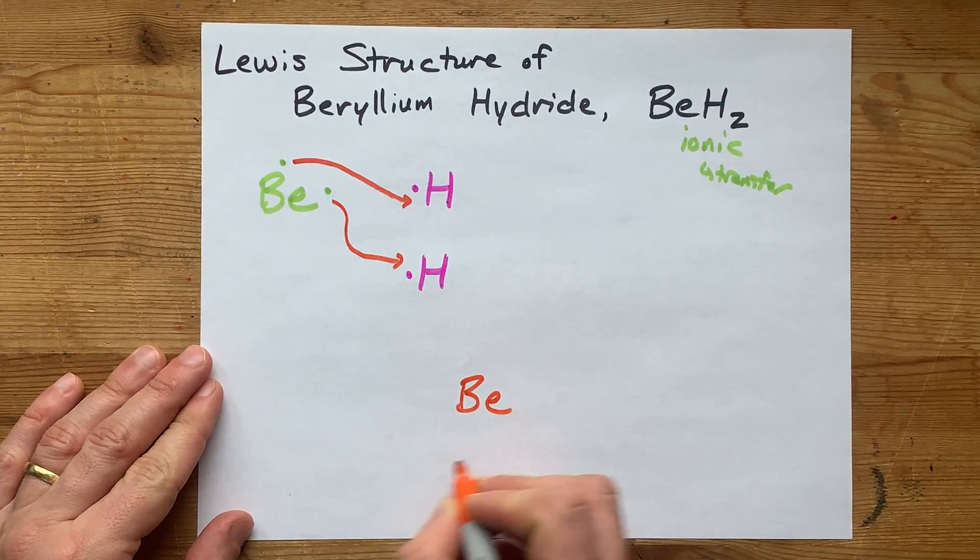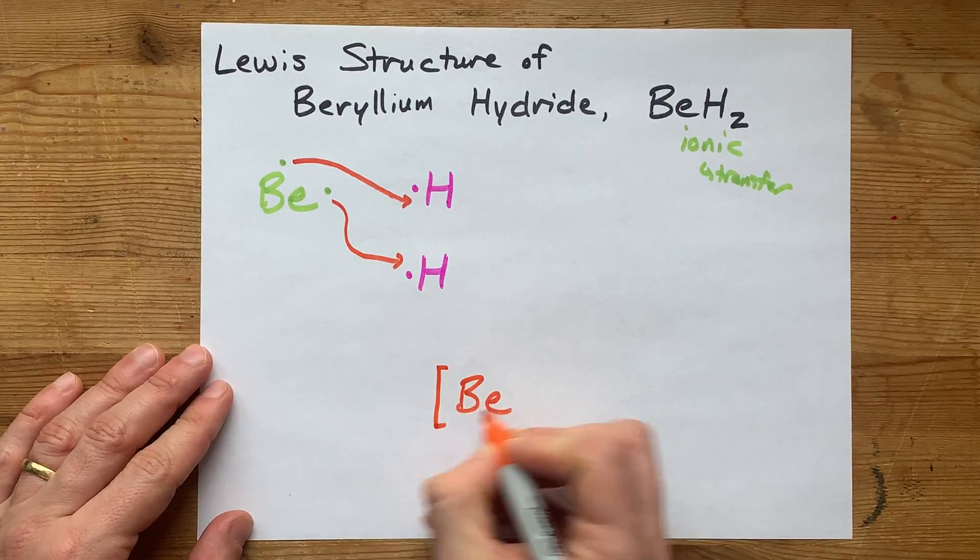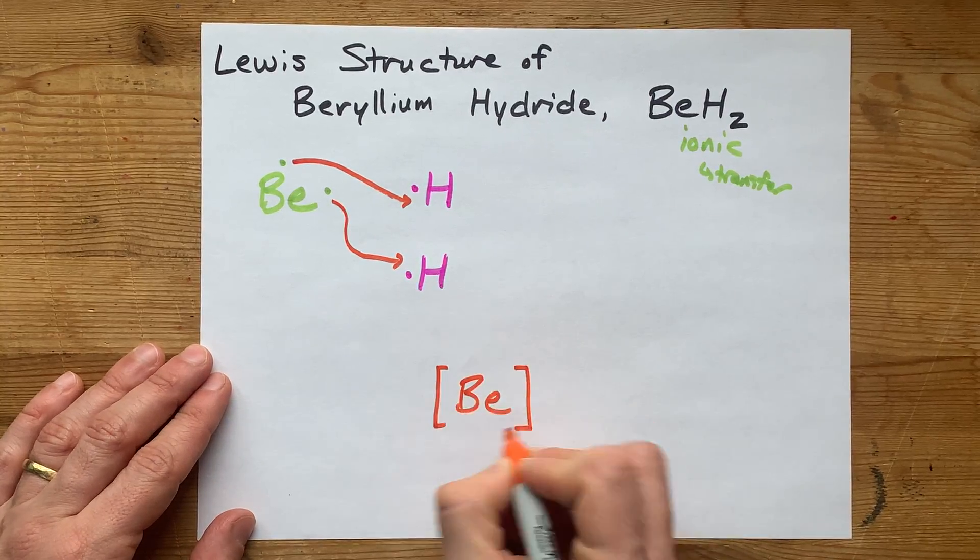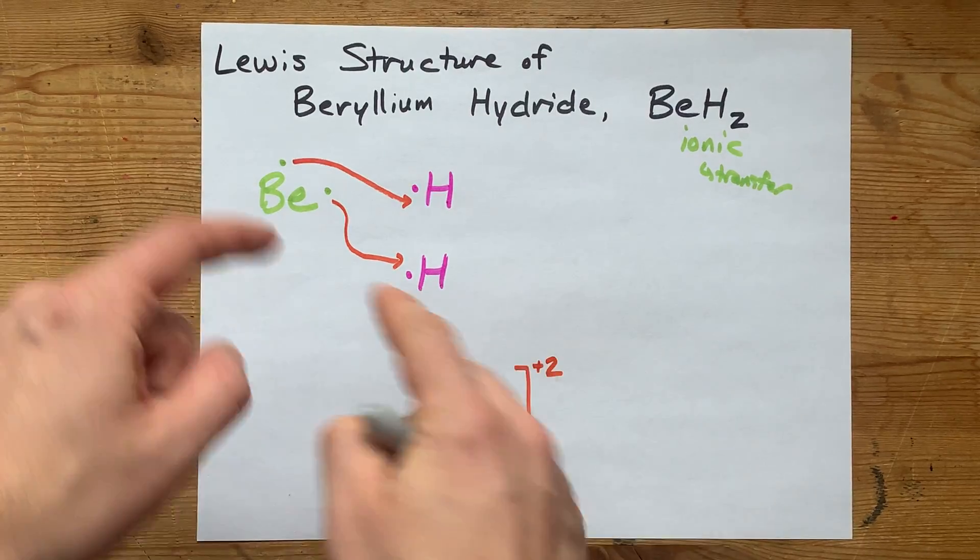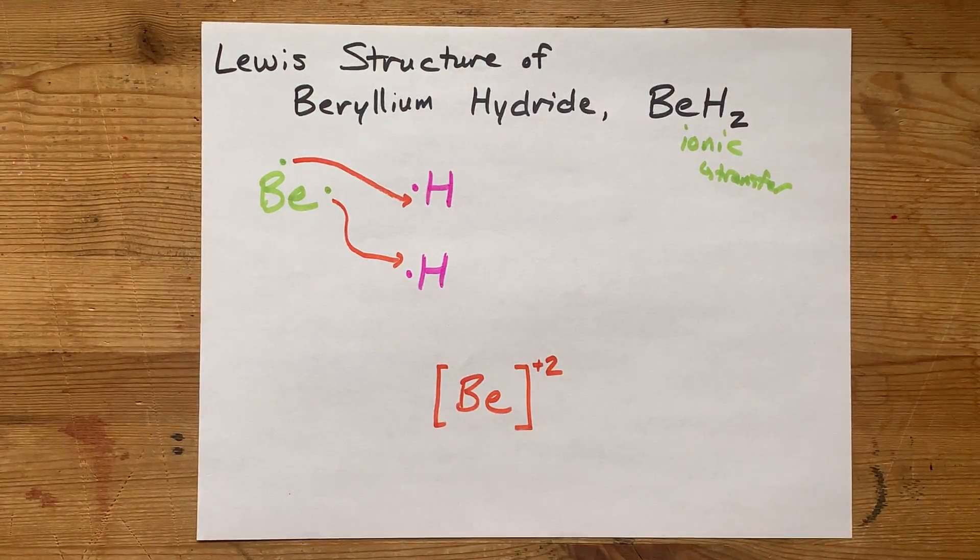That means our complete Lewis structure has a beryllium atom with no valence electrons drawn around it and a plus 2 charge because it gave away two negatively charged electrons.